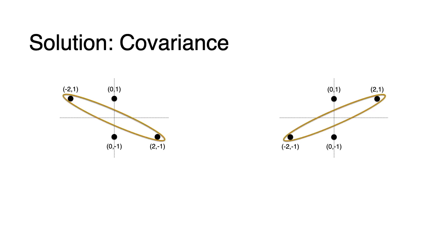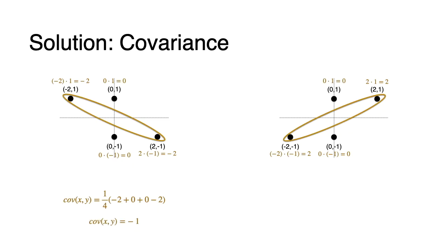The way we tell these apart is with something called covariance. On the left, the points form a diagonal going up and to the left; on the right, it's the opposite diagonal. The key is the product of the two coordinates. For example, −2 times −1 is 2, and 2 times −1 is −2 on the left, whereas on the right they are 2 times 1 equals 2 and −2 times −1 equals 2. So the covariance is the average of all the products of coordinates: on the left it's the average of −2, 0, 0, and −2, which is −1. On the right it's the average of 2, 0, 0, and 2, which is 1. That is what tells them apart — that is covariance.